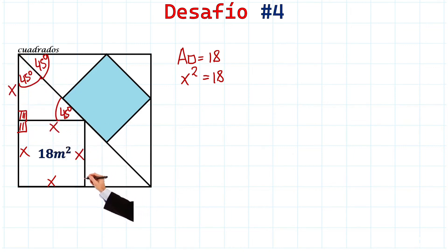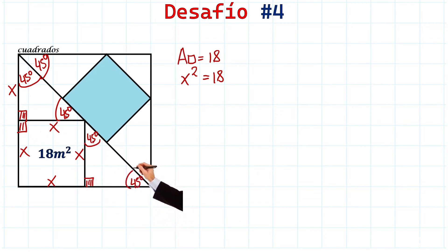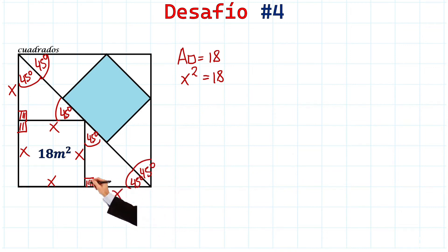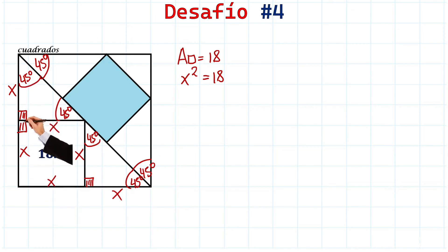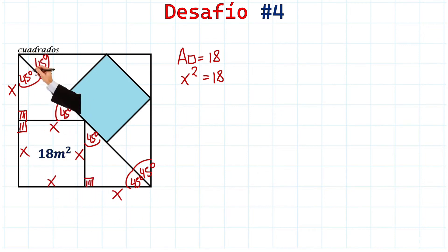The same thing happens here: we have 90 degrees and 45 degrees, because the diagonal divides into two equal angles of 45 and 45. So we have another isosceles triangle, and therefore this side is also x. The side of the big square will be x plus x, which gives us 2x.